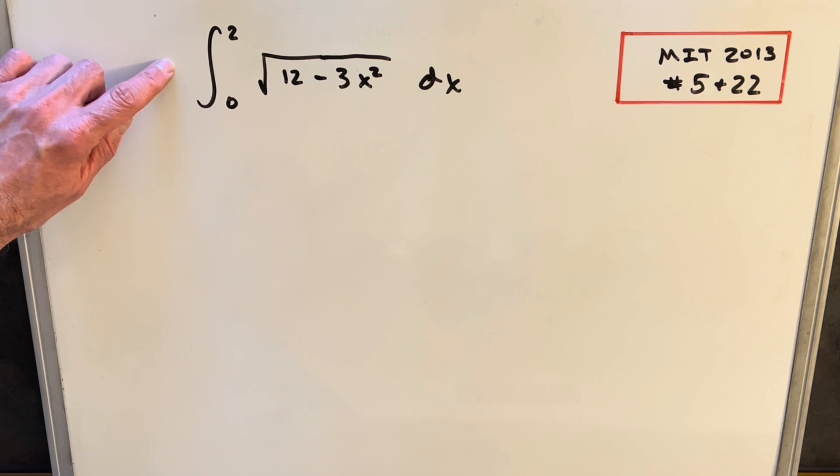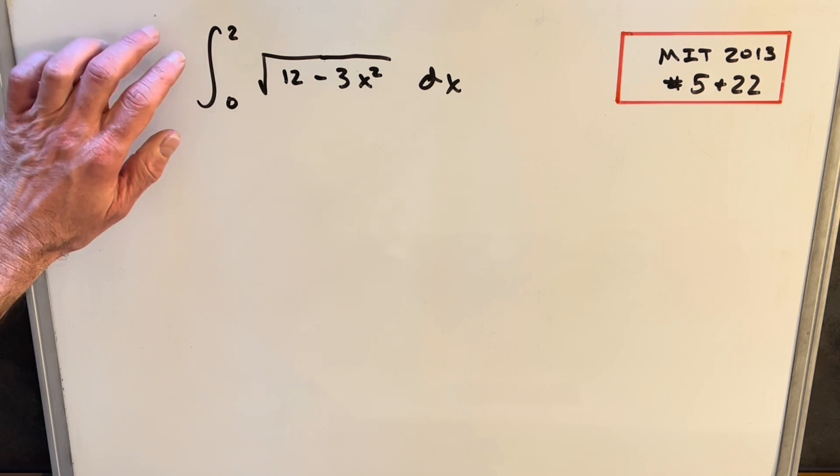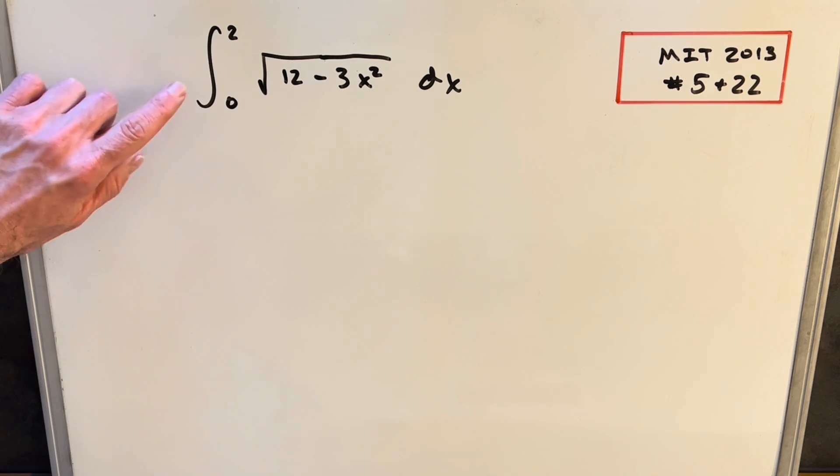So what we have here is actually problem 5. If we solve the indefinite integral, what we'll do is we'll ignore the bounds, we'll solve 22 first, and then we'll come back and plug in the bounds to solve 5.